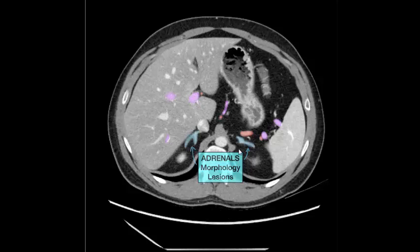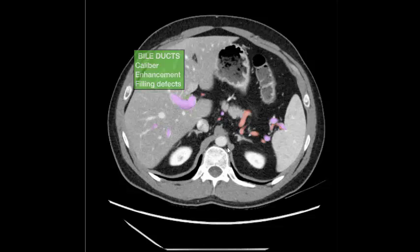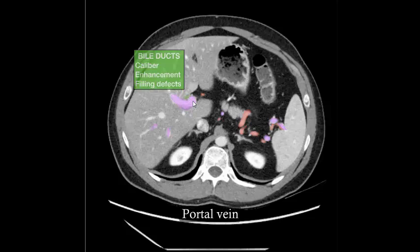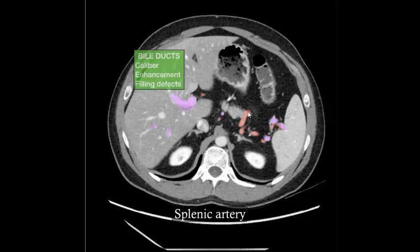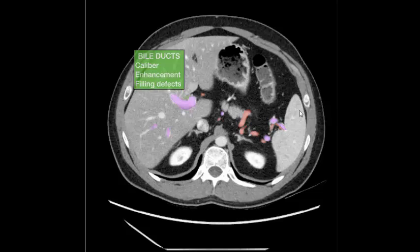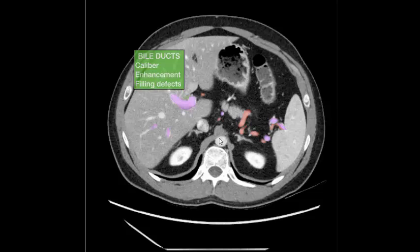Spleen, inferior vena cava, right and left kidney, splenic artery, spleen, transverse colon, abdominal aorta.